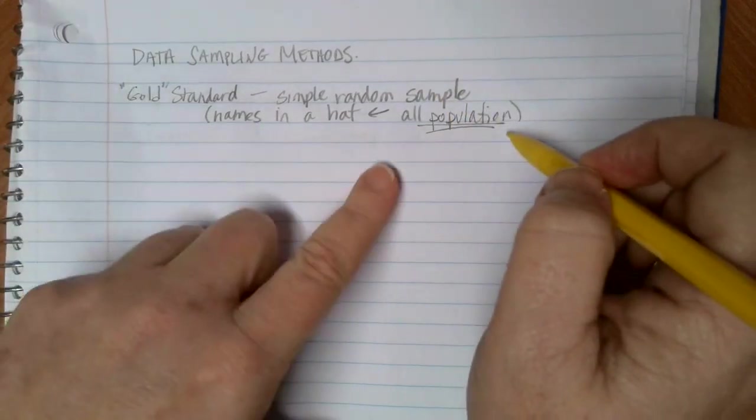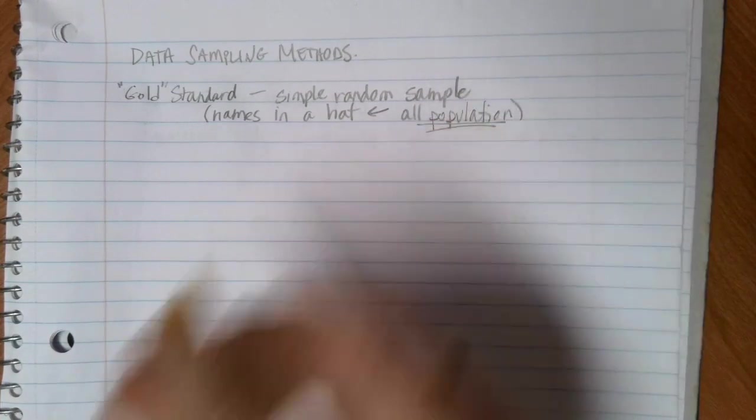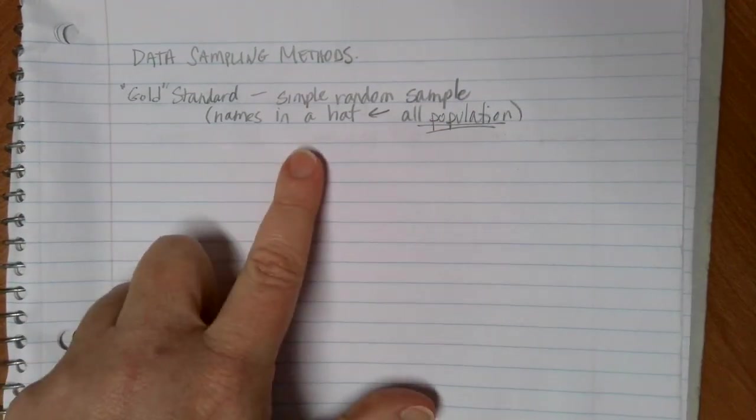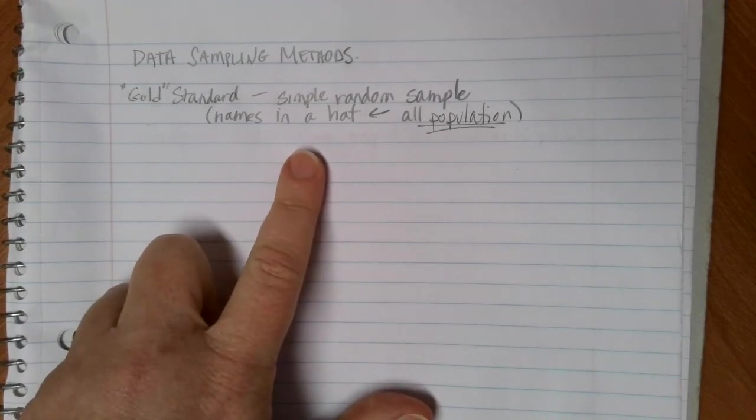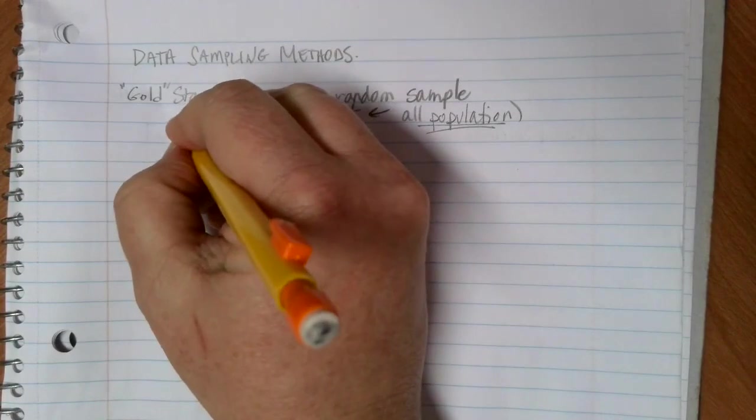All of those are examples of simple random samples where the entire population is there and has an opportunity to get picked. You either have to physically shake it up like the hat or you have to have something like a computer to be able to generate the randomness.